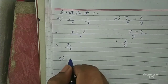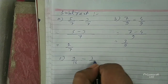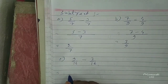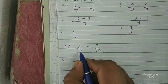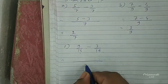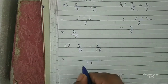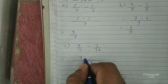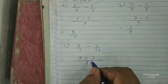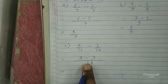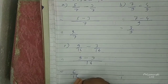Another: 9 by 16 minus 3 by 16. First, check the denominator — 16 and 16 are same, so the common number is 16. Numerator is 9, put minus sign, numerator 3.